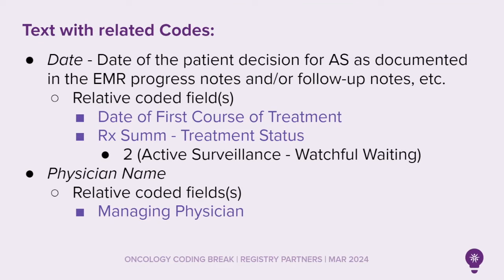The date of the patient decision for active surveillance, as documented within the EMR progress notes and/or the follow-up notes, has the relative coded fields as Date of First Course of Treatment, which would be the same as the date of the decision, and Rx Summary Treatment Status, which would be coded to a 2 for active surveillance or otherwise known as watchful waiting. For the physician name, you would code this in the managing physician field, which is the physician responsible for the discussion and the recommendation for the decision of active surveillance with the patient.